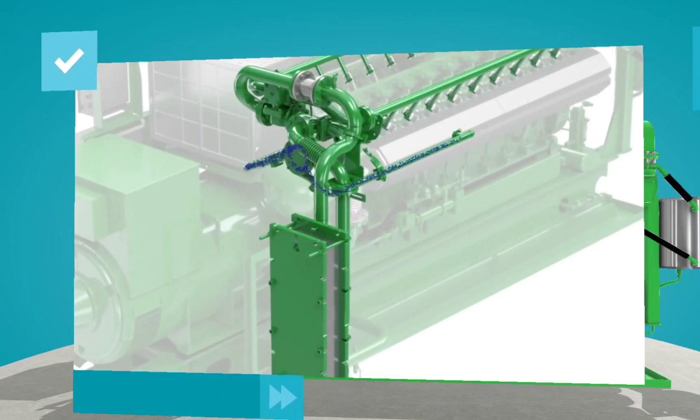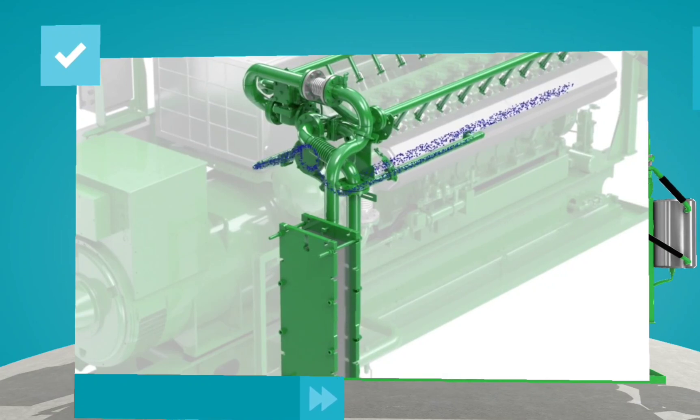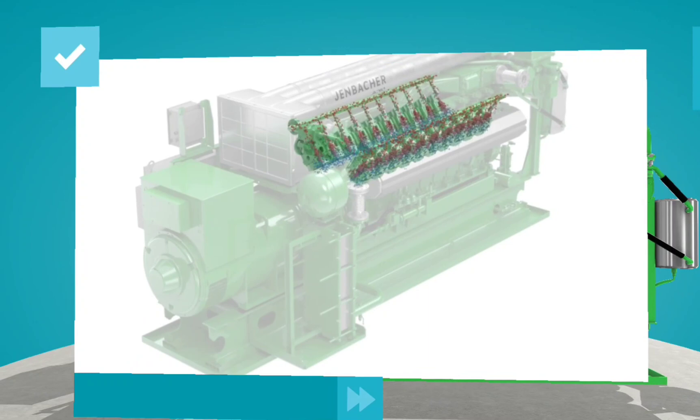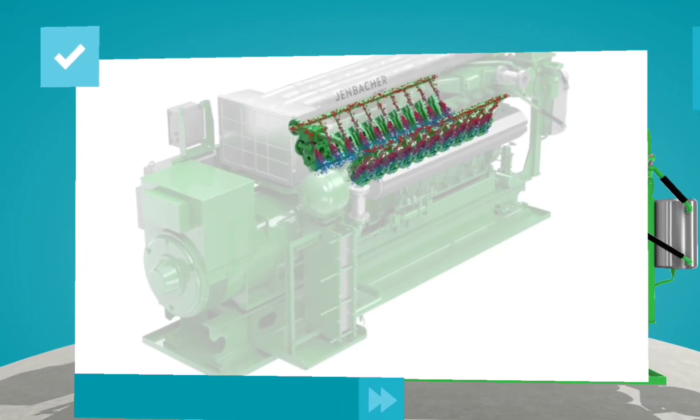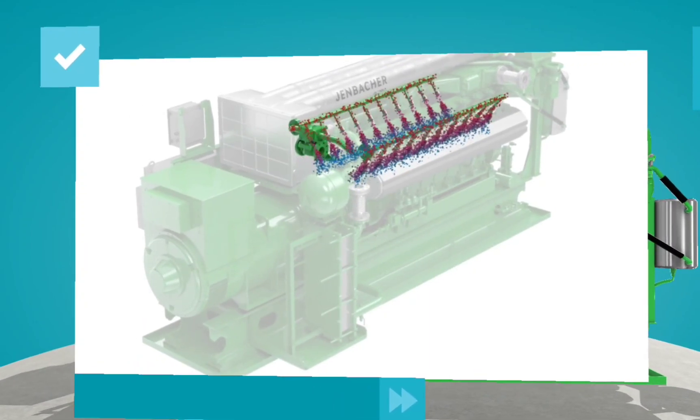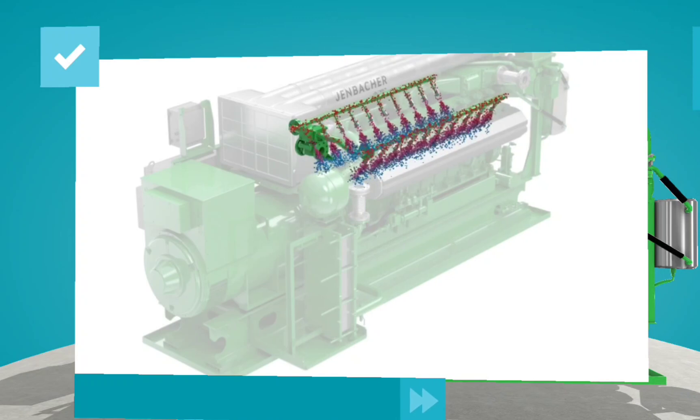The jacket water pump pumps water into the engine block, where it begins to heat up. It then flows through the cylinder heads, getting even hotter, before collecting in the manifold.